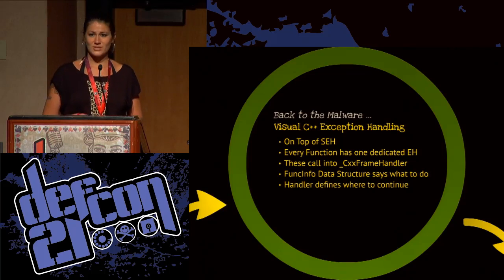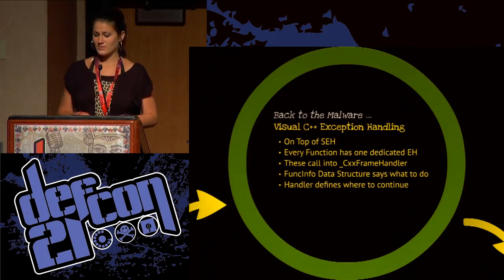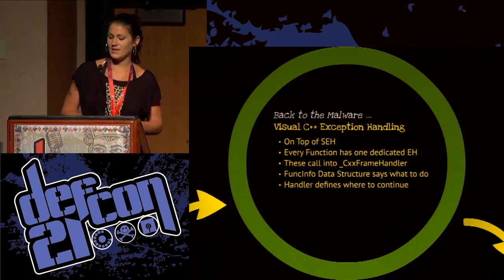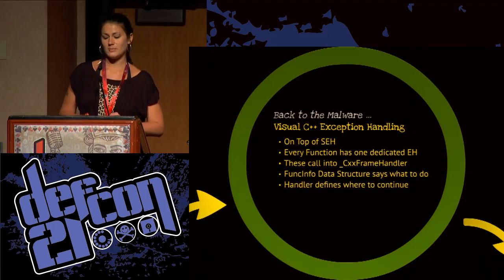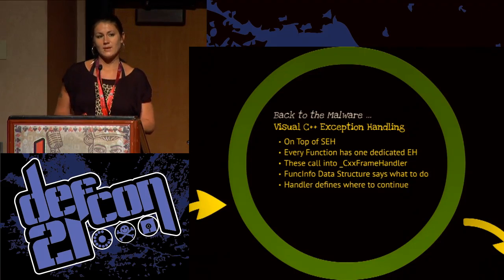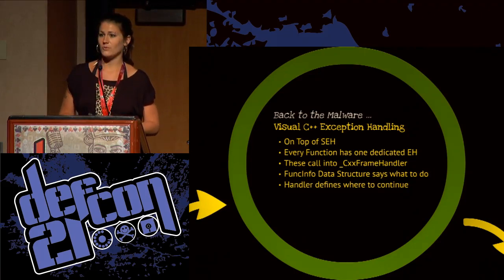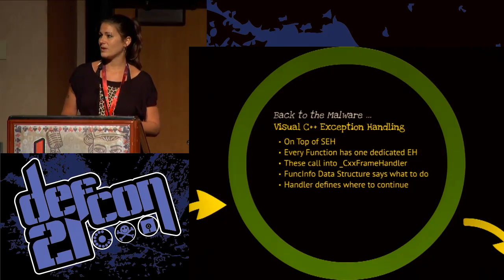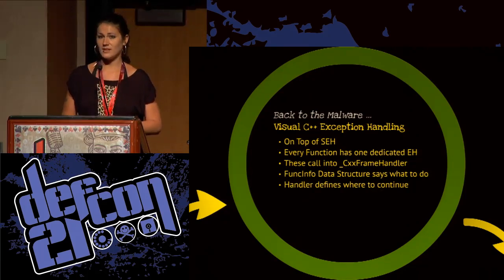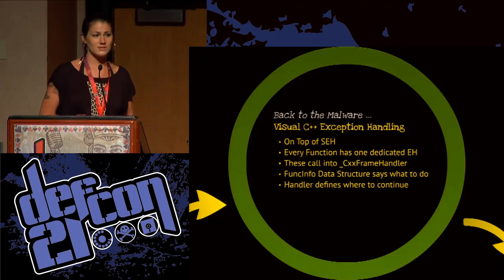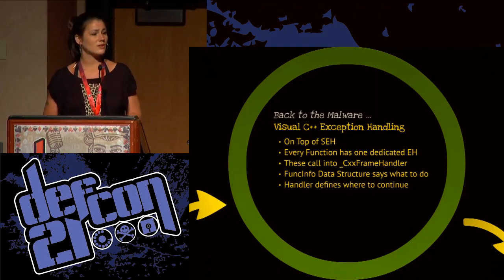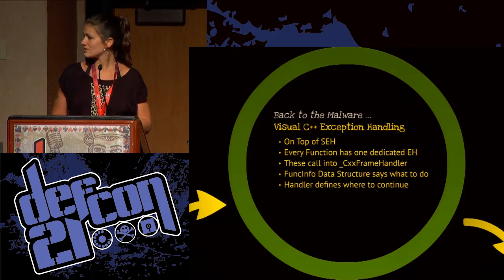Until today, a lot of things have changed, especially concerning C++. In Visual C++, while it's still based on structured exception handling, the main change is that now every function has its own exception handler and uses a func infrastructure which contains information about try blocks and catch blocks.